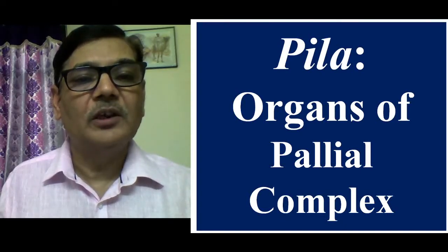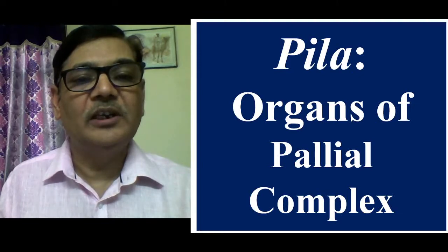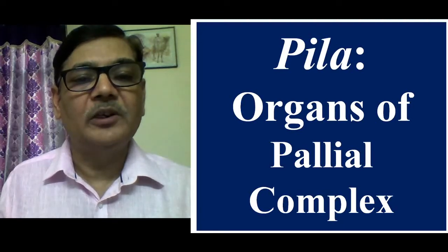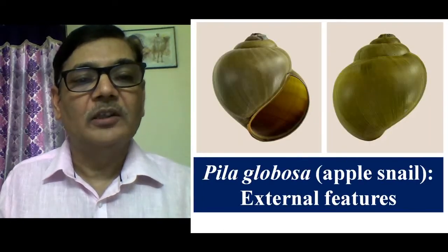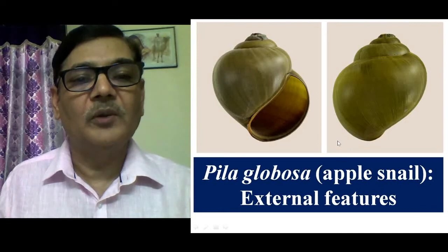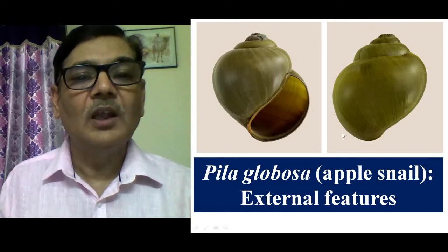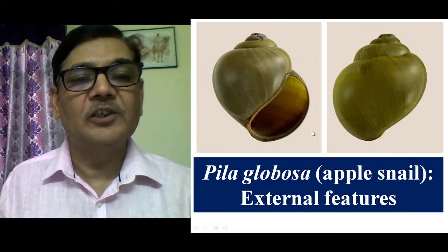One of the aspects in the study of Pila, the apple snail, is the organs of Pila complex. This deals with those organs which are situated in the mantle cavity or Pila cavity of this animal. The animal Pila globosa is commonly known as apple snail and is very well found in India in almost every part of our country. The species which is commonly occurring is Pila globosa.